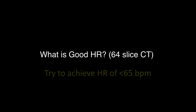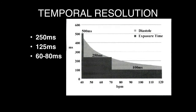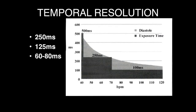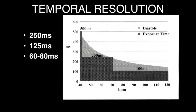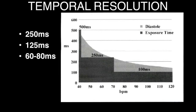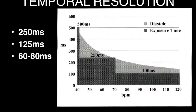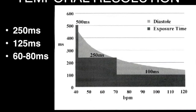A good heart rate needs to be achieved. For a basic 64-slice scanner — and for any scanner less than 64 slices — the heart rate must be less than 65 beats per minute. This is important due to the concept of temporal resolution. The heart is at its least motion during the end-diastolic phase of the RR cycle. When we have a low heart rate, the RR interval is longer, and hence the end-diastolic phase is also of longer duration.